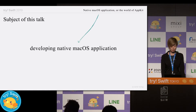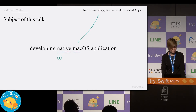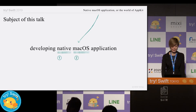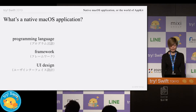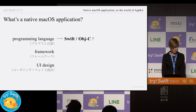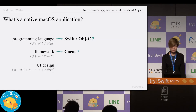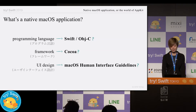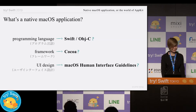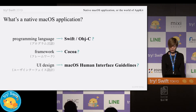The subject of my talk is developing native macOS applications. It contains two keywords: native and macOS. What would be a native macOS application? Is it native if written in Swift or Objective-C? Is it native if it uses the Cocoa framework? Or is it native if it follows the macOS Human Interface Guideline? Most people agree that an app using Cocoa is native — but what if it uses Cocoa in a totally wrong way? Is it better than an Electron app carefully designed to conform to the HIG? Which is better for users?